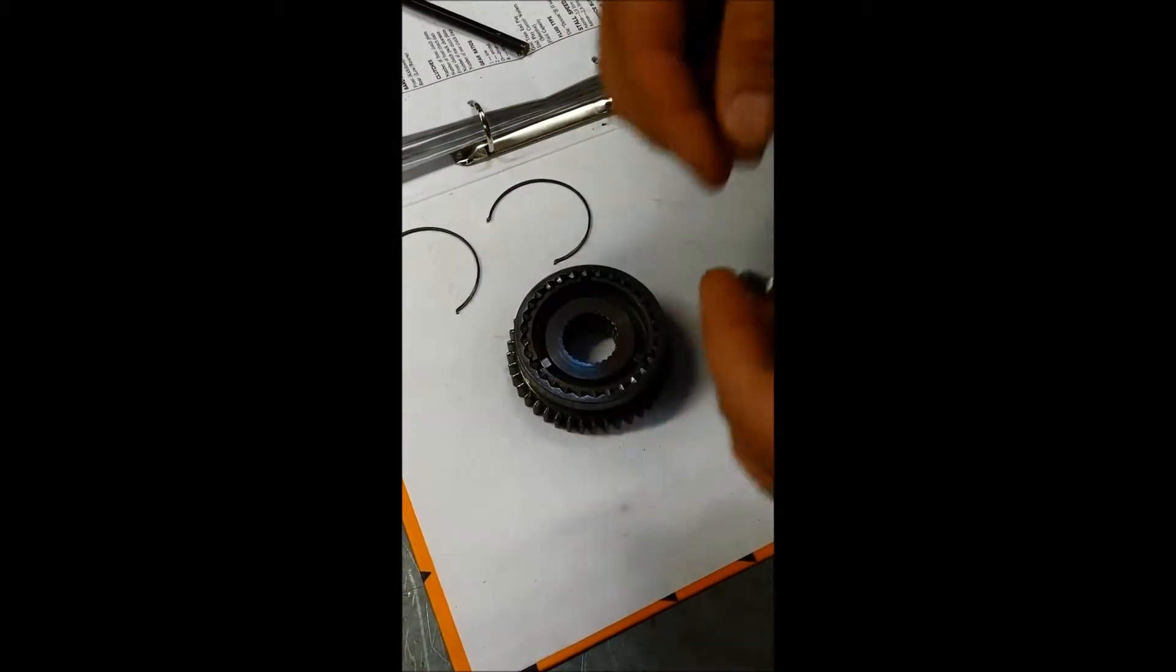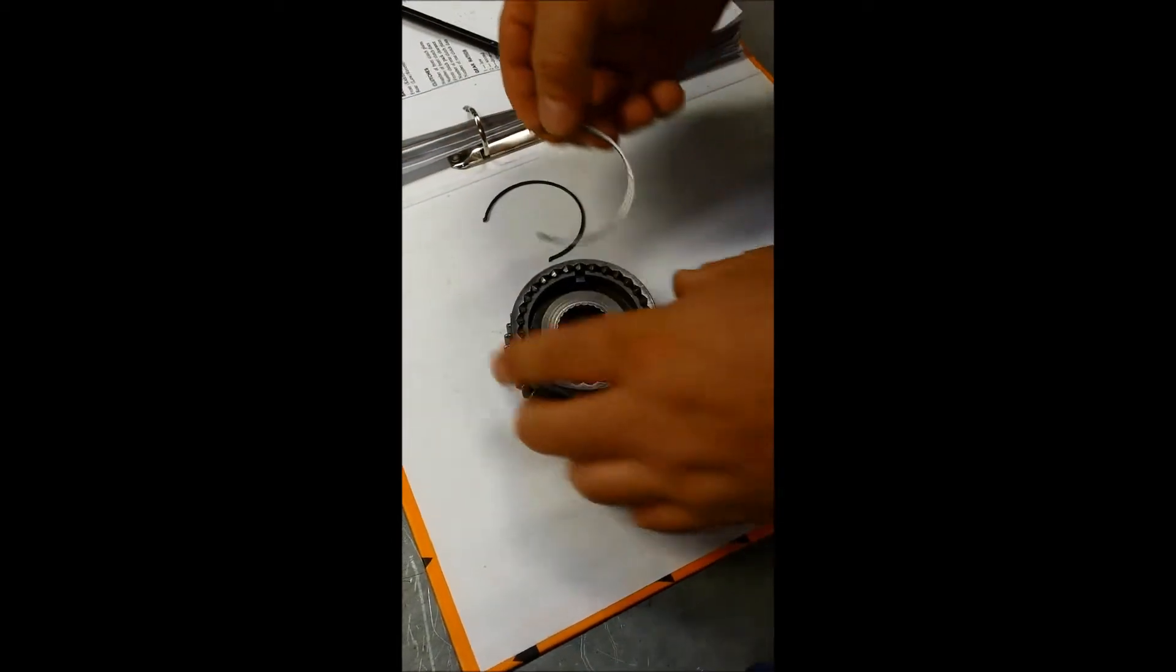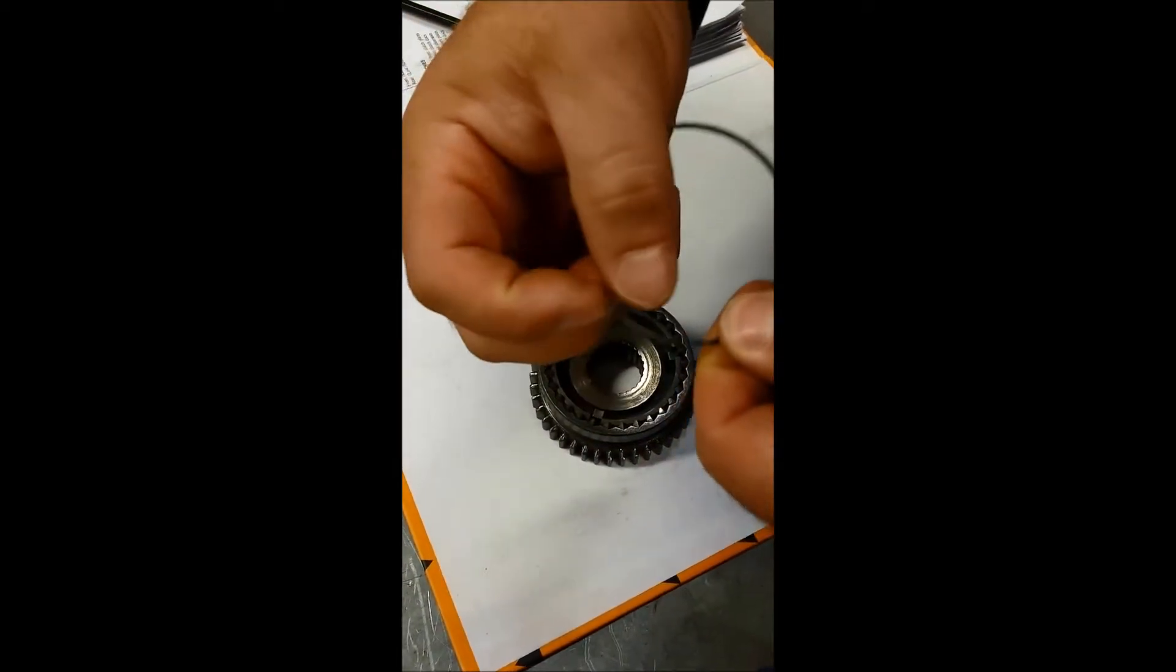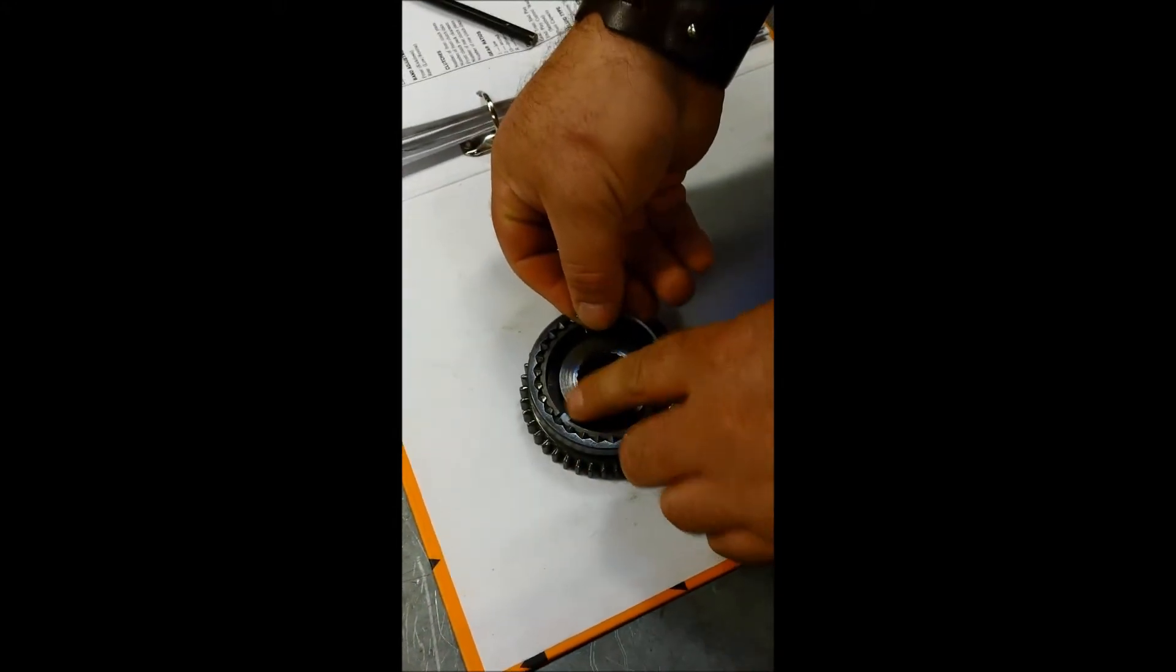And then finally, all you do is get the springs. There's a little tiny lip on the end of the spring there that sits against the end, the side of one of the dogs, in there like that.